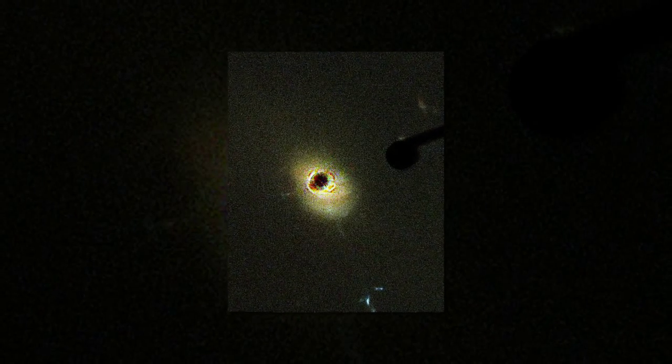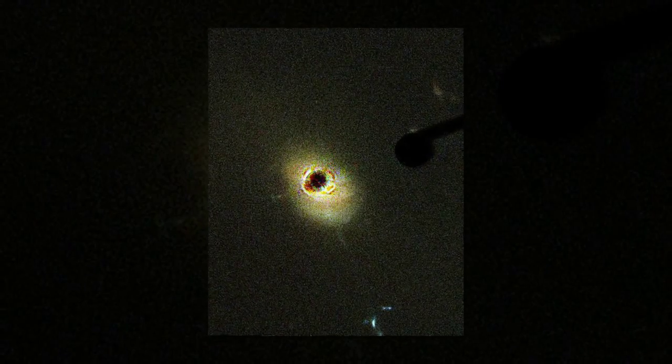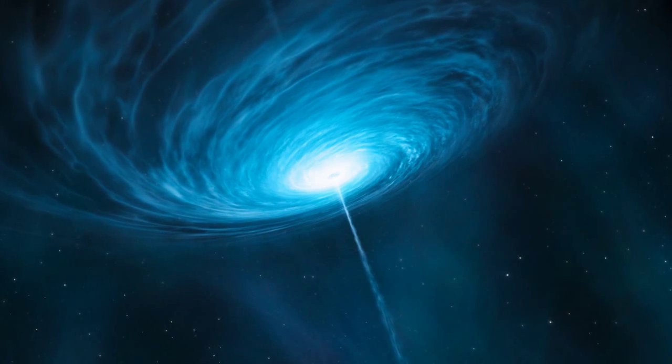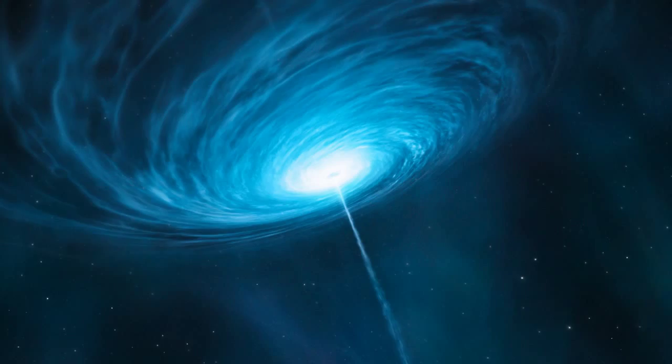PKS 1302-102 is one of the few known quasars with a pair of black holes within its accretion disk. It is also a curious case for astronomers as it will produce a powerful explosion when these two black holes merge.